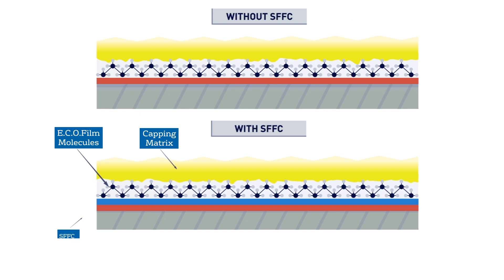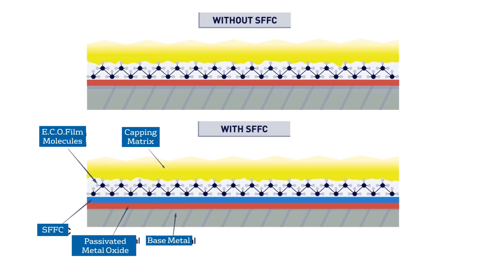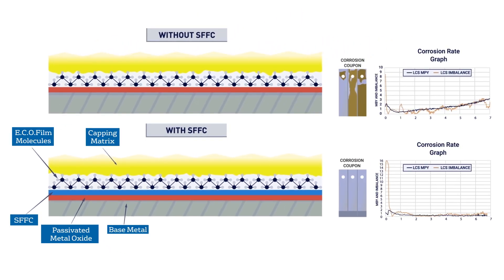In some applications, a surface film formation catalyst, or SFFC, will be used in the Ecofilm program to enhance the metal oxide passivation layer and provide a more robust protective film in challenging waters with higher corrosivity.